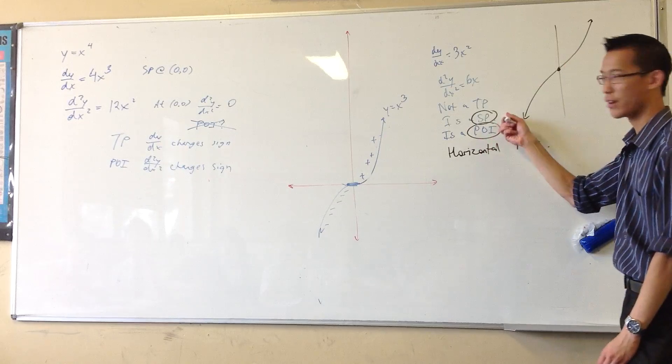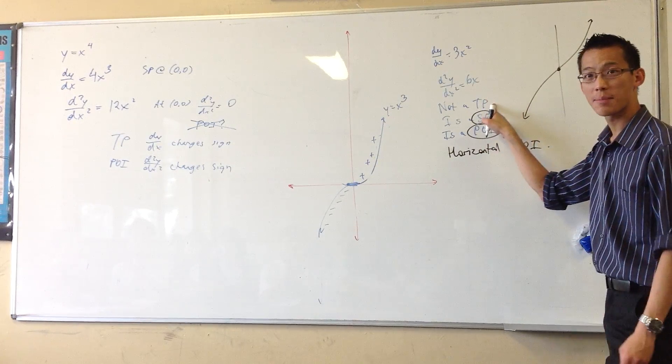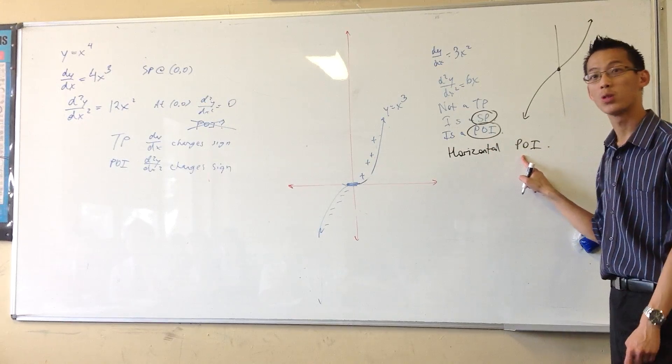So, you remember we said stationary points, right? They might be turning points or they might not be. If they're not turning points, they'll be these. Horizontal points of inflection, okay?